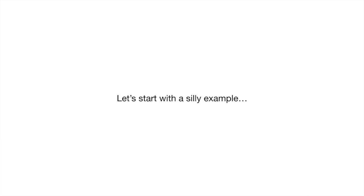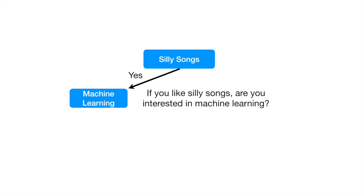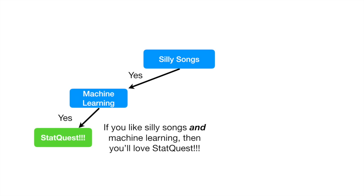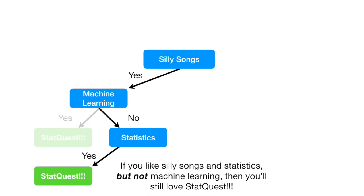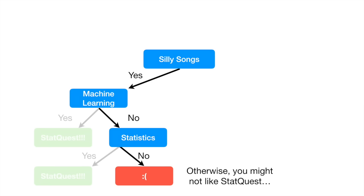Let's start with a silly example. Do you like silly songs? If you like silly songs, are you interested in machine learning? If you like silly songs and machine learning, then you'll love StatQuest. If you like silly songs but not machine learning, are you interested in statistics? If you like silly songs and statistics but not machine learning, then you'll still love StatQuest. Otherwise, you might not like StatQuest.